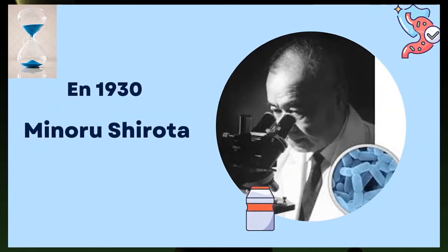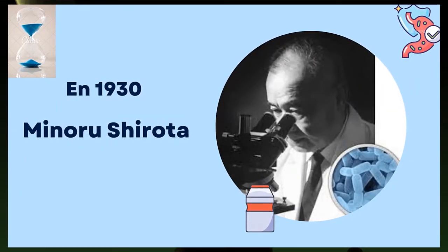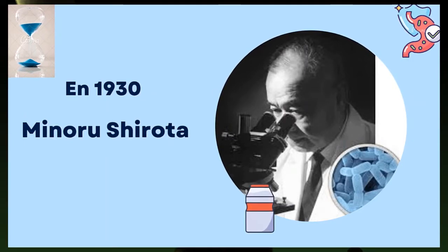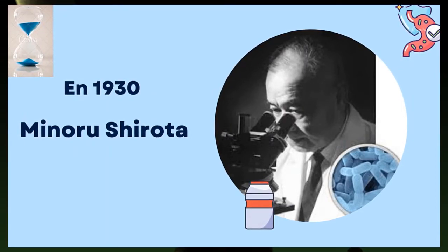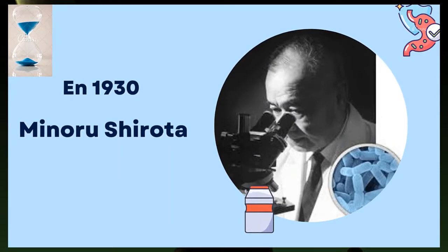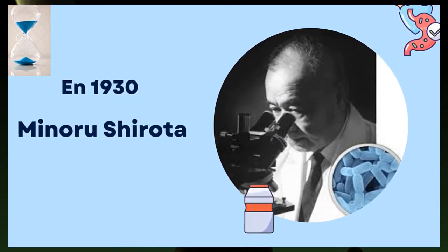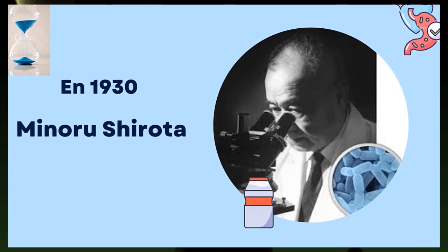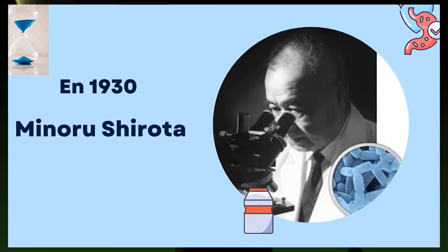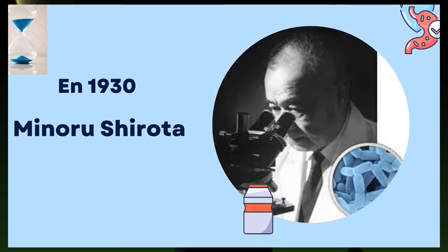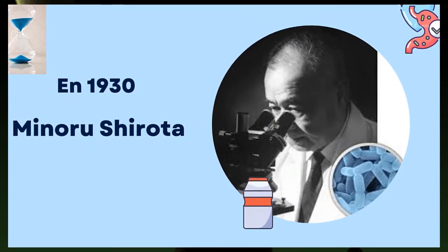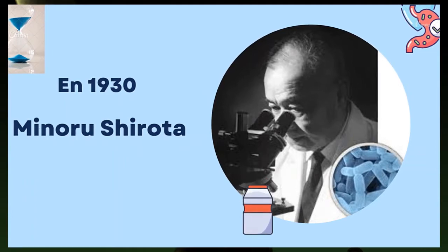En 1930, el doctor Minoru Shirota, inspirado por los escritos de Mechnikov, se convirtió en la primera persona en el mundo en cultivar una cepa de bacterias lácticas benéficas para la salud humana que destruirían las bacterias dañinas. Dicha bacteria fue nombrada Lactobacillus casei shirota en su honor. Posteriormente, Shirota con esta cepa desarrolló el Yakult, bebida de leche fermentada que se introdujo al mercado en 1935.